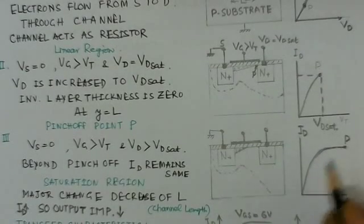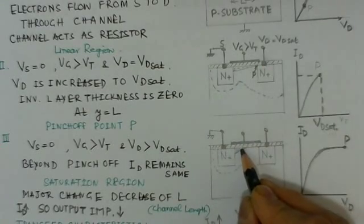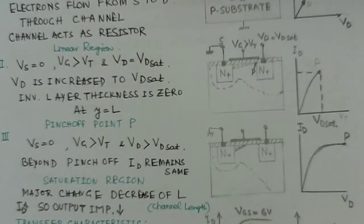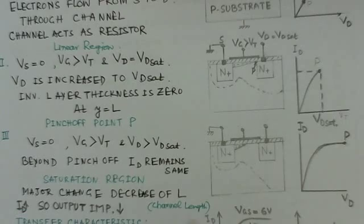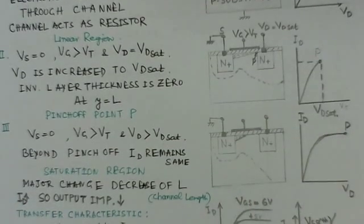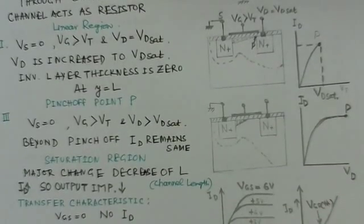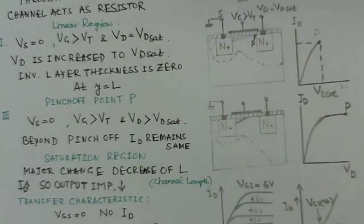As indicated here, the saturation region occurs and the channel length further reduces. Although there is not a major change due to the decrease of channel length, due to some effects the output current slightly increases. This drain current increase gives rise to a reduction in the output impedance of the device. The dotted portions show the depletion layer for different bias conditions.